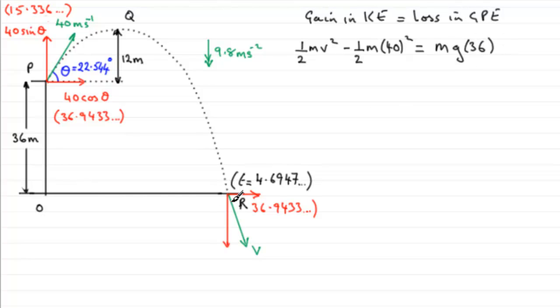It had no gravitational potential energy down here at R if we take that as our zero level. So we've got a simple equation that we can solve for v because there's an m in every term, so we can cancel out the m. If we multiply through by 2, you'll find that you get v² minus 40² equals twice g times 36, so 2 times 9.8 times 36.